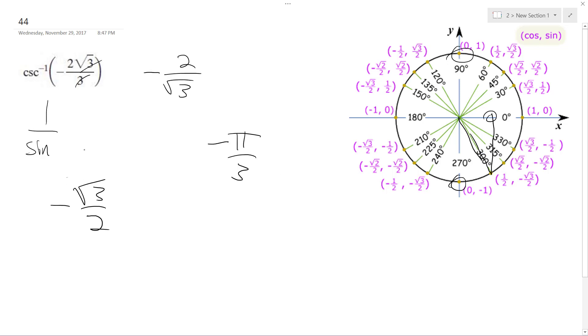But what happens is, since it's the cosecant, it's 1 over this, and that's how you get the 2 over root 3, and they rationalized it, so you get negative 2 root 3 over 3.